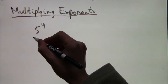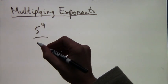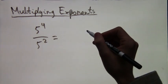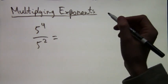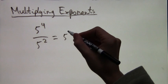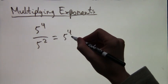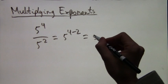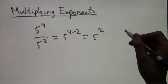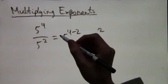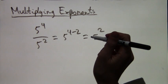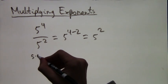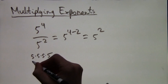Let's take 5 to the fourth and now we're going to do division — we're going to divide by 5 to the second. As you may guess, since division is the opposite of multiplication, instead of adding we're going to subtract. We're going to do 4 minus 2, so we get 5 squared. So remember: when we have multiplication we add the powers, and when we have division we subtract them.